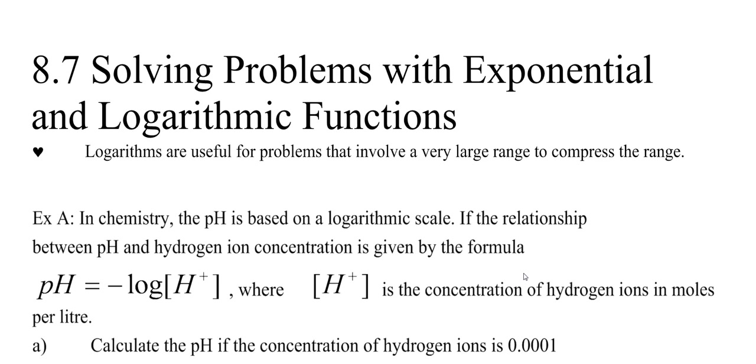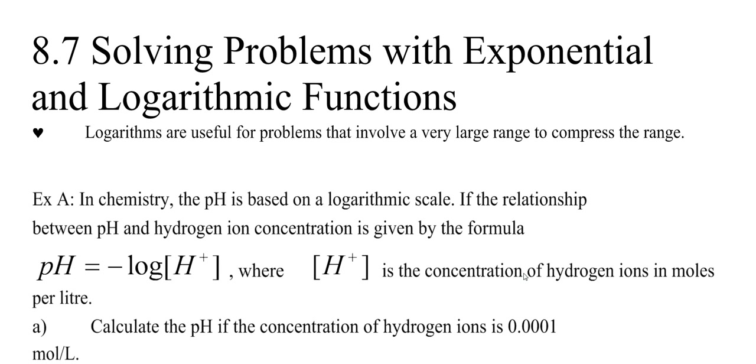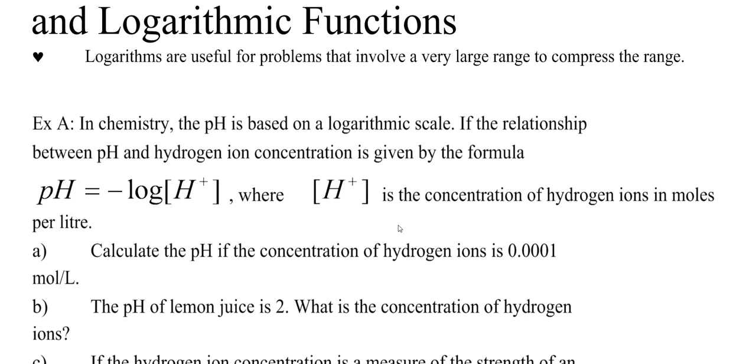We usually use logarithms for problems that involve a really large range and we want to compress that range. For example, when we're measuring the hydrogen ion concentration in a formula, we can have a really wide range of how many hydrogen ions are concentrated. So we would use a logarithmic scale to make it a little bit smaller, more manageable, so it only goes up to 7.